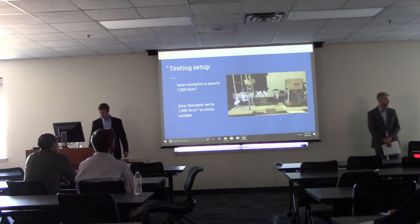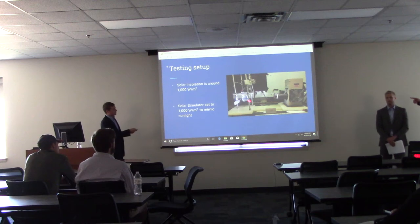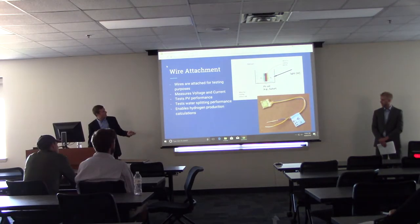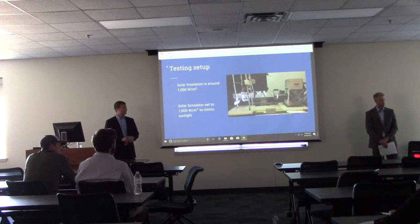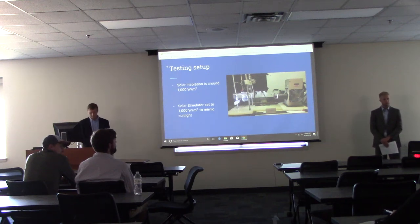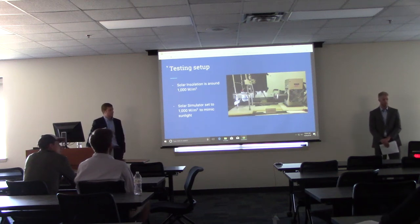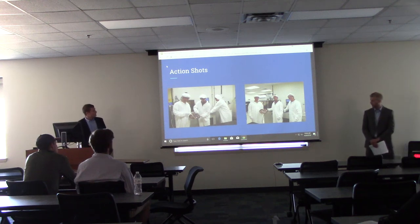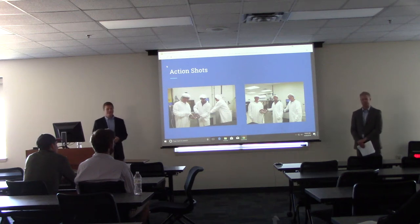The testing setup included a solar simulator lamp on the right and a beaker with our test sample on the left. Solar insolation from the sun is generally categorized as about 1,000 watts per square meter, so that's what we set our solar simulator to based on the sensitivity and distance — mimicking sunlight as accurately as we could. We worked in a clean room, wearing bunny suits to avoid contaminating our samples.